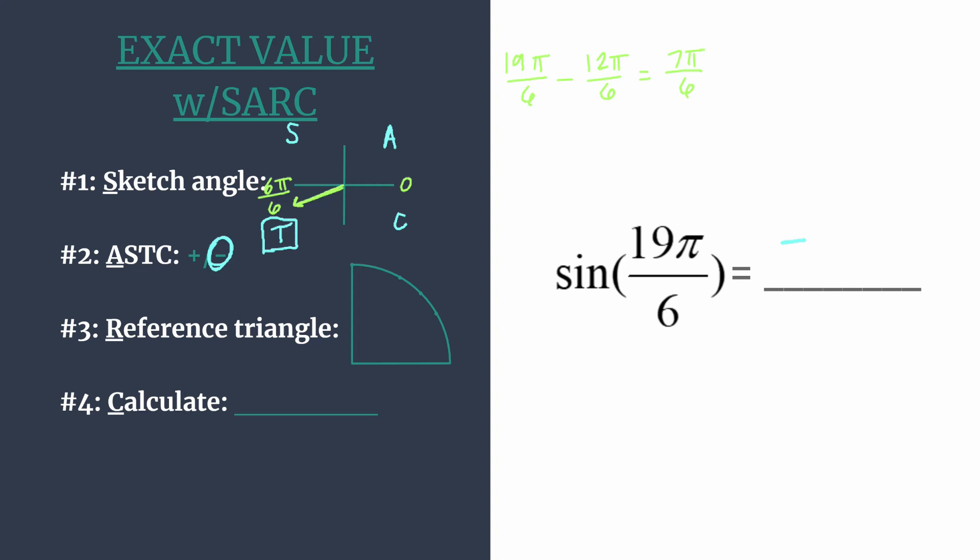All right, so now we're ready for step 3. We will find the reference angle, which is simply the amount of rotation between your angle's terminal side and the x-axis. Okay, so we went to 6π over 6 or π and then to 7π over 6.